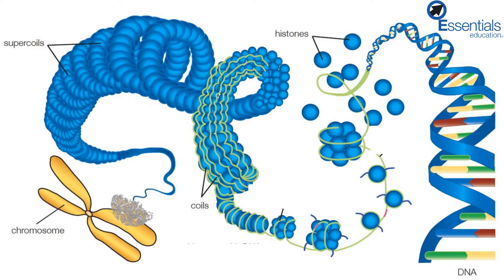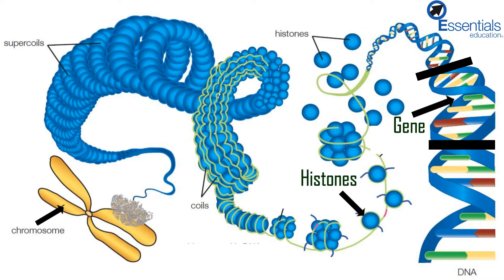The length of the strand that contains the code for making one protein is called a gene, and many genes joined together create what we call a chromosome. A chromosome is basically the organisational unit of DNA, as it contains proteins called histones which the DNA coils around, giving it structure. All organisms contain genes connected together to make chromosomes, however different organisms contain different amounts of DNA and therefore different numbers of chromosomes.